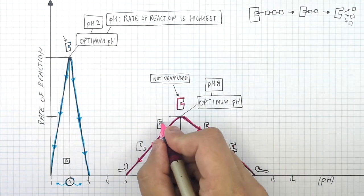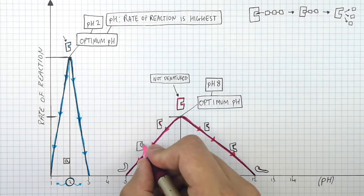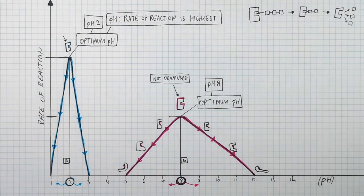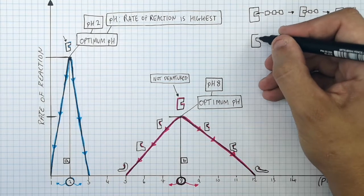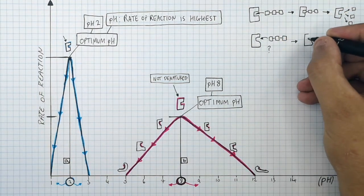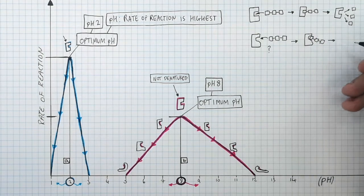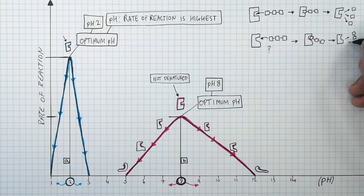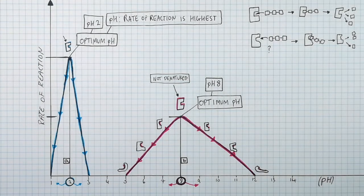The further away from the enzyme's optimum pH, the more the enzyme denatures, so the more the enzyme's active site changes shape. If the enzyme's active site denatures slightly, the substrate can still bind the active site of the enzyme, but not as well. Therefore, the breakdown of the substrate into products takes place more slowly, so less product is made and the rate of reaction is slower.